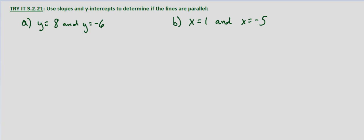So if it's horizontal we need to make sure that the numbers that they're equaling are different. If it's vertical we need to make sure that the numbers are different that x equals.